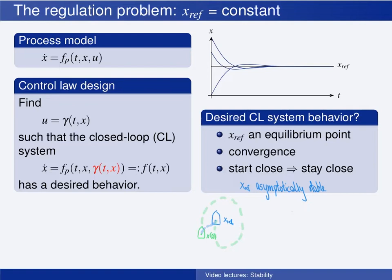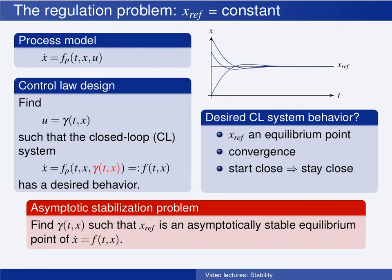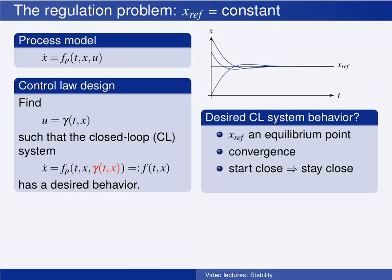So the regulation problem can be stated as: find a controller such that the constant reference state is an asymptotically stable equilibrium point of the closed-loop system. This is the asymptotic stabilization problem, and often we shift the reference state to the origin such that the origin becomes the equilibrium point that we want to stabilize. The way we do this is by performing a coordinate transformation — specifically, we work with error coordinates instead of the original x-coordinates. We define the error coordinate e as the difference between the state x and the reference state x_ref. Notice that this shifts the desired equilibrium point to the origin: when x equals x_ref, this is equivalent to the error e being zero.